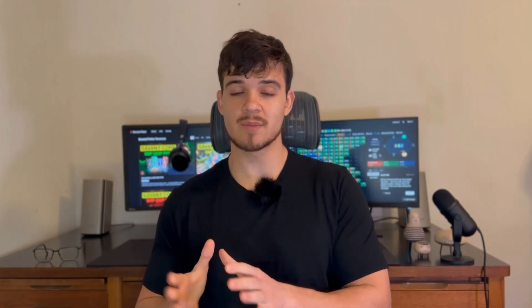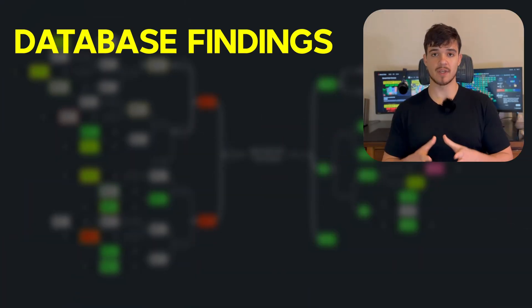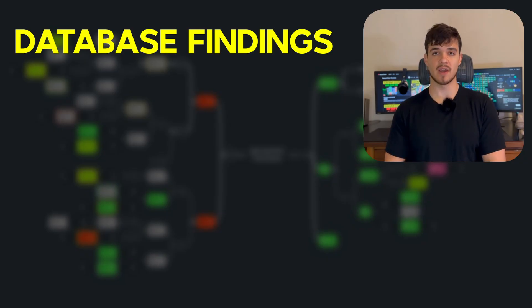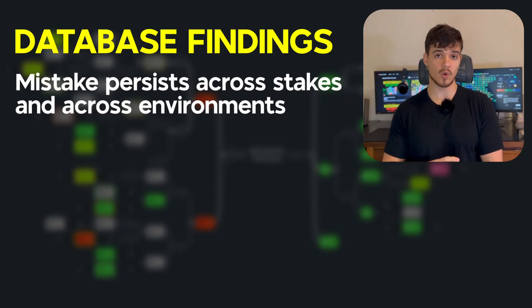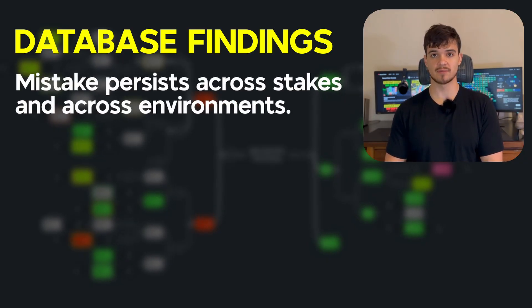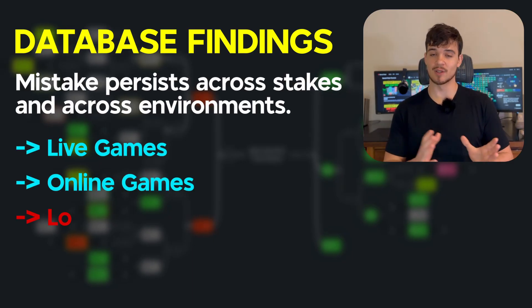I also posted the same data but for three bet pots in the premium section of our community discord for Savant members. The next big point I want to hone in on is the fact that this fundamental error is universal. According to database analyses of tens of millions of hands, this mistake persists across stakes and across environments. This means that you'll encounter it both in live and online games at low and high stakes alike.